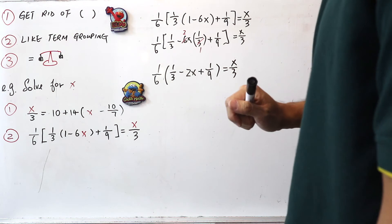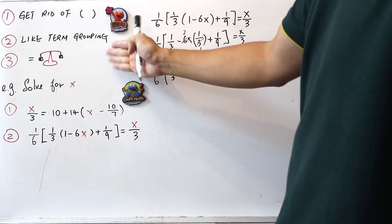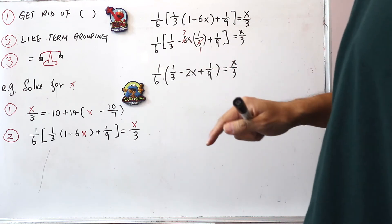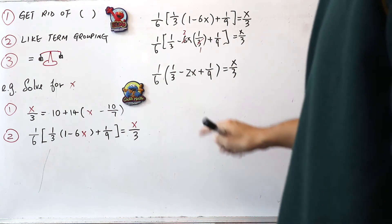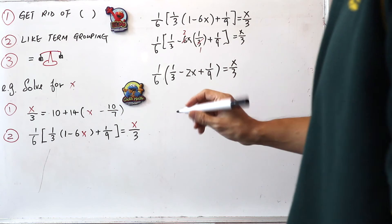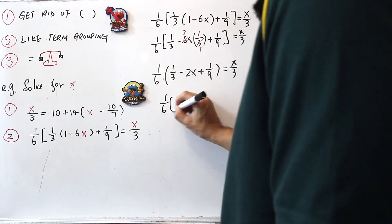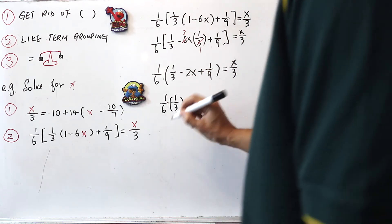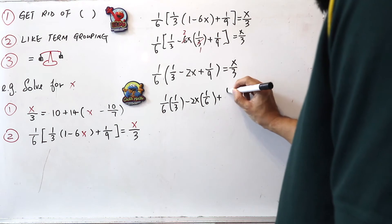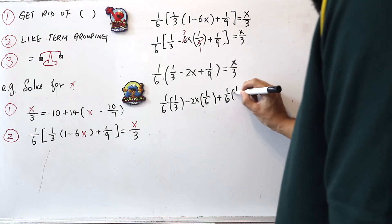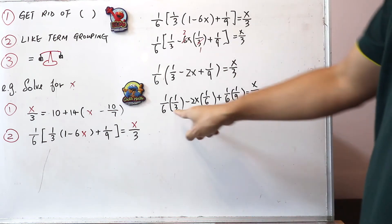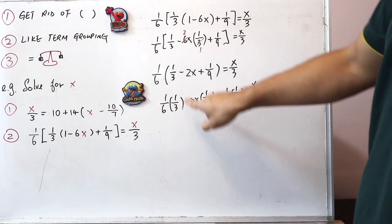Now we still have the square bracket — we haven't gotten rid of all brackets yet. So we multiply 1 over 6 to each term inside this round bracket: 1 over 6 times 1 over 3, then minus 2x times 1 over 6, plus 1 over 6 times 1 over 9, equals x divided by 3. We can simplify: 3 divided by 3 is 1, giving us terms we can work with.